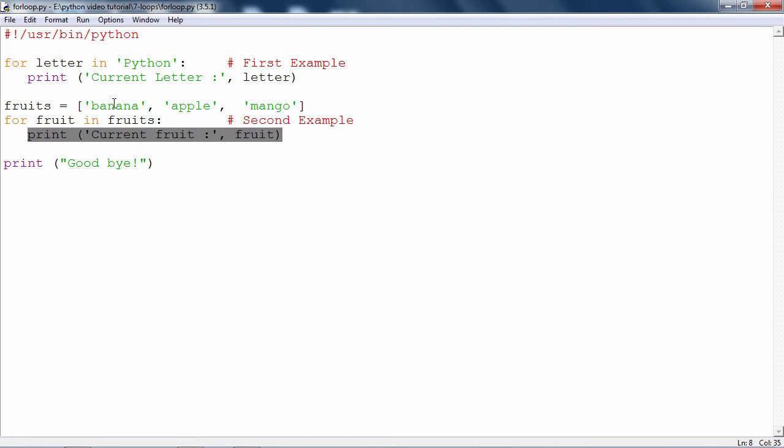And the entire list is traversed by taking one by one each element from the list, assigning to the controlling variable till the list is exhausted. So, what is the output to be expected? Current fruit banana, current fruit apple, current fruit mango till the list is complete.